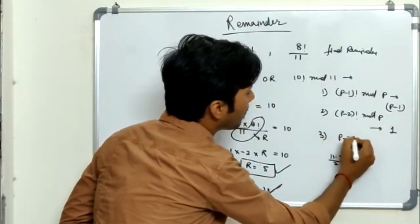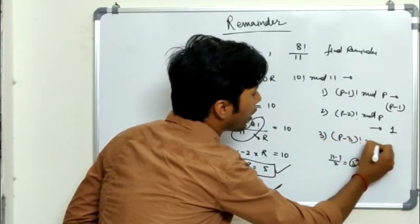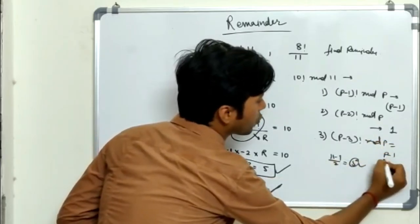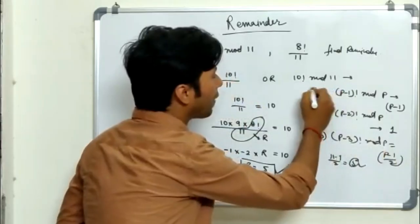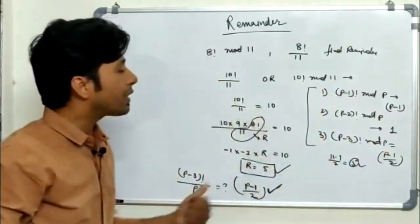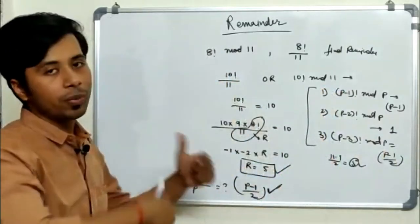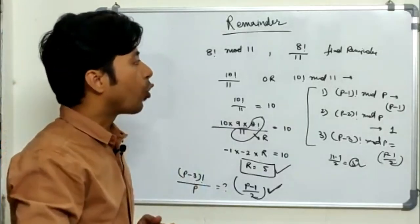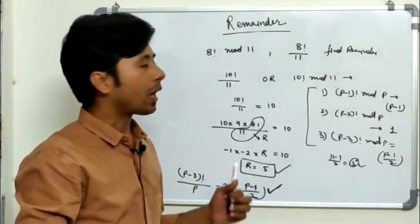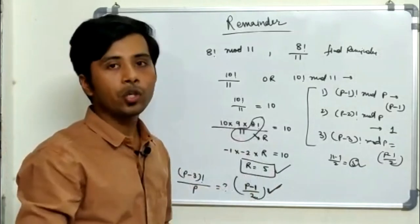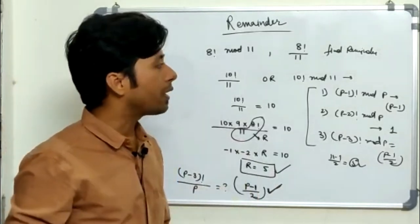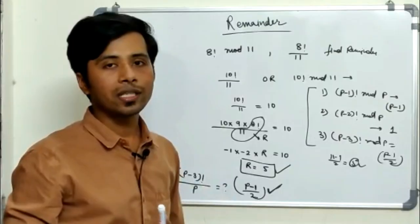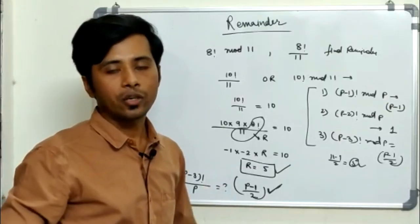So to summarize the three cases: (p−1)! mod p gives remainder p−1; (p−2)! mod p gives remainder 1; and (p−3)! mod p gives remainder (p−1)/2. Remember this technique and you will be easily able to solve these kinds of questions. I hope you learned something new here. If you liked the video, share it with your friends who are preparing. I'm coming up with more new concepts, so stay tuned. Thank you guys.